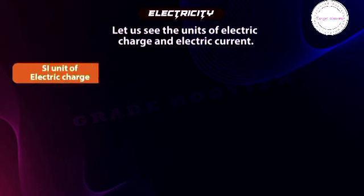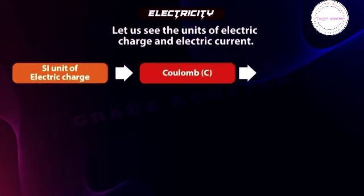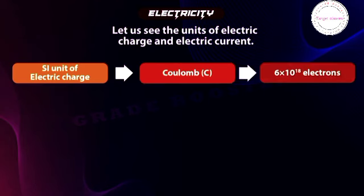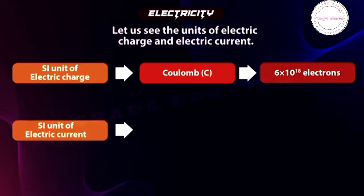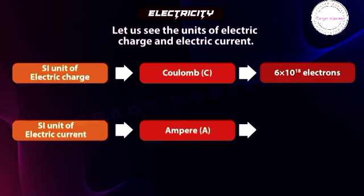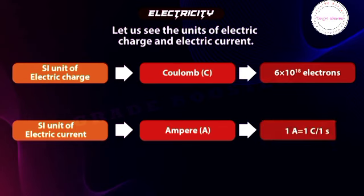SI unit of electric charge: the unit of electric charge is the coulomb (C). One coulomb is roughly equal to the charge of 6×10¹⁸ electrons, with each electron carrying a charge of 1.6×10⁻¹⁹ coulombs. SI unit of electric current: the unit of electric current is the ampere (A). One ampere is the flow of one coulomb of charge per second: 1A = 1C/1s.